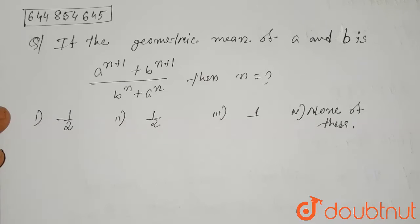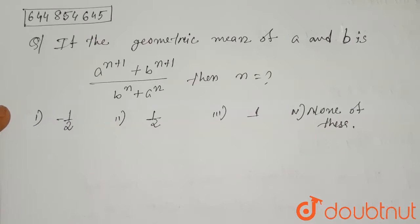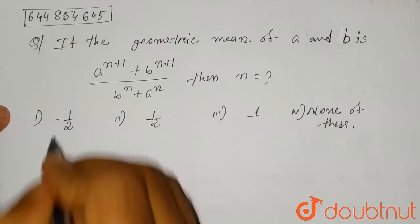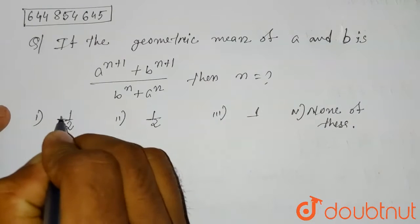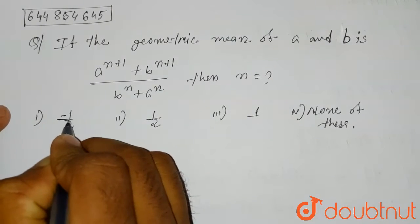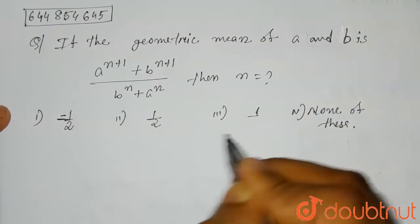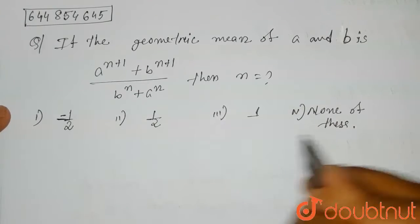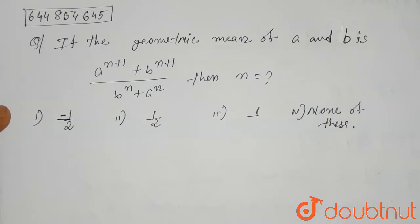Hello everyone. The question is: if the geometric mean of a and b is (a^(n+1) + b^(n+1)) divided by (b^n + a^n), then n equals? Option 1 is minus half, option 2 is half, option 3 is 1, and option 4 is none of these.